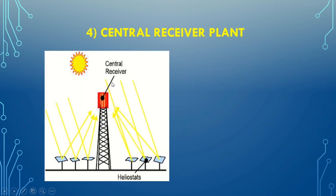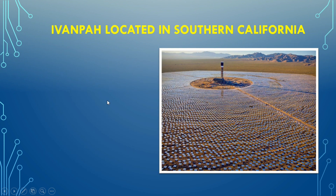The fourth technology is the central receiver plant. Here all the mirrors, which are called heliostats, concentrate the sun rays to a central tower called the central receiver, which contains salt. This salt gets heated up to 500 to 600 degrees Celsius.